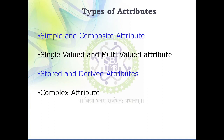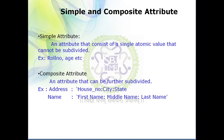There are various types of attributes. The first category is simple attribute versus composite attribute. A simple attribute is one that consists of a single atomic value and cannot be further subdivided. Examples of simple attributes are your roll number, age, college ID, and enrollment number — because these cannot be further divided into sub-parts.